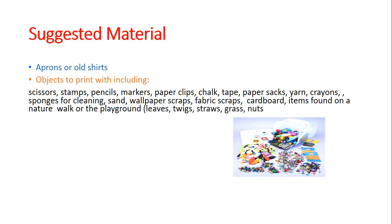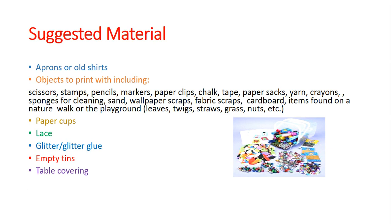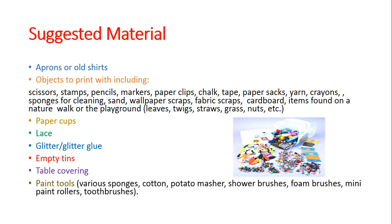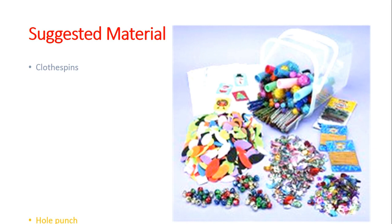Items from nature walks include leaves, twigs, straws, grass, and nuts. Additional materials include paper caps, lace, glitter or glittery glue, empty tins, table covering, paint tools, and various forms like cotton, potato mashers, shower brushes, foam brushes, mini paint rollers, toothbrushes, and cloth pins.